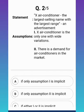Moving to the next question. The statement says: X air conditioner is the largest selling name with the largest range and advertisement. Assumption one is: X air conditioner is the only one with wide variations. Assumption two is: there is a demand for air conditioners in the market. Which assumption is correct?